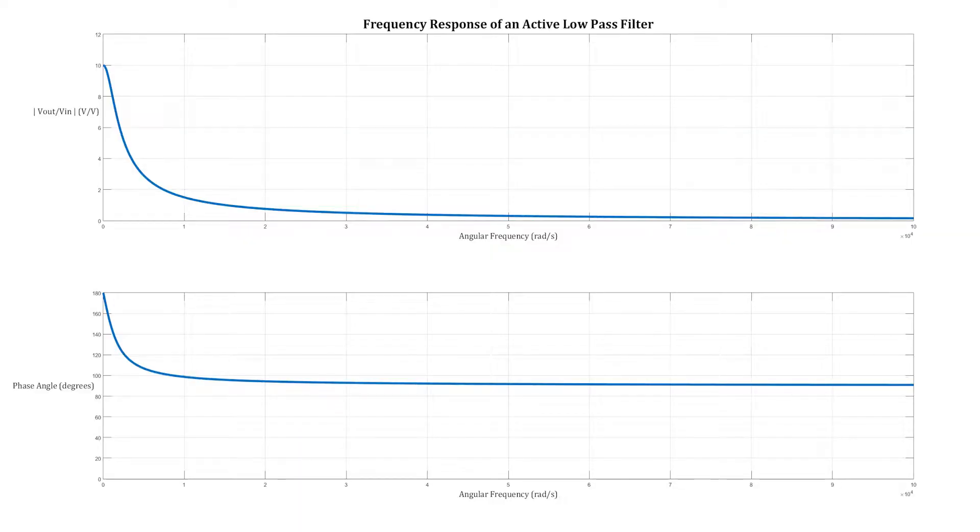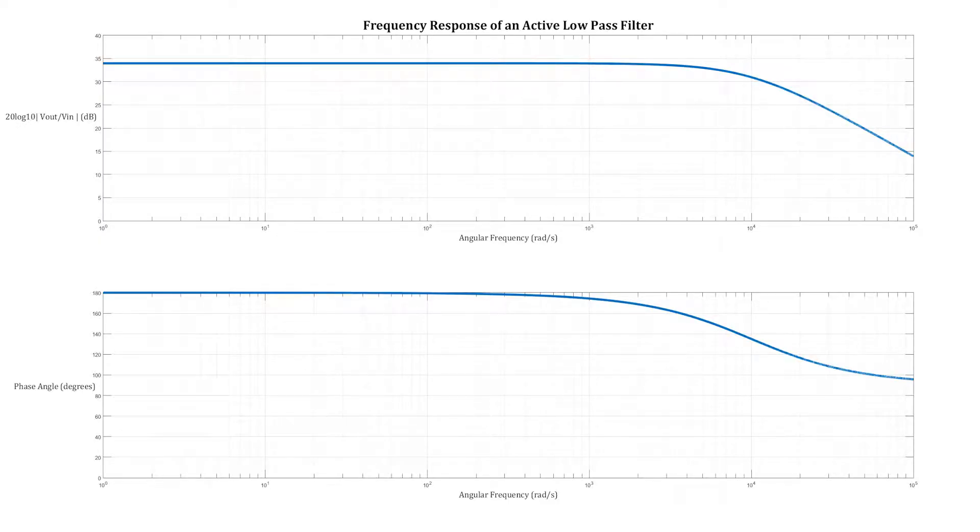If we were to graph the function on a linear scale, everything would happen in the first 10% of the graph, and it would be very hard to discern any detail of what happens at the lower end of the graph. When we use a logarithmic scale for the frequency, we can more easily interpret the behavior of the circuit.